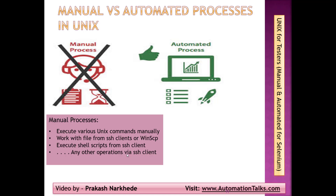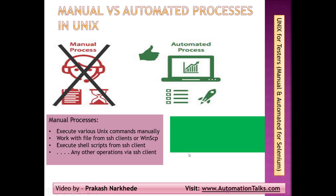All those Unix processes — whether from your project or any manual processes discussed — can be automated with the help of an SSH client library. There are many SSH client libraries specific to different languages: for Java there is one set of libraries, for C# there is another. For this course I'll be using Java, and there is a library called JSch. There are four to five libraries in Java, but JSch is one of the best and most popular ones.